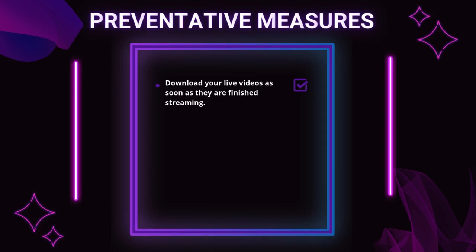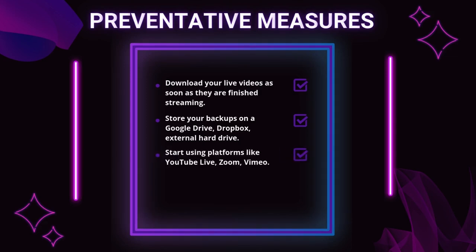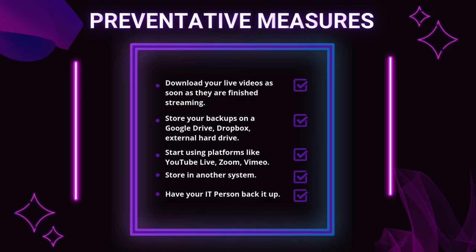Let's talk about preventative measures — what can we do to prevent this problem in the future? How can you make sure you never lose a live video again, whether it's on Facebook or anywhere else? First, download your live videos as soon as they are finished streaming. Store your backups on Google Drive, Dropbox, or an external hard drive. If your lives are important to your business, start using platforms like YouTube Live, Zoom, or Vimeo, or store content in another system and have it backed up with an IT person. If you go live regularly, record a separate backup while streaming using OBS Studio, Zoom, or your camera — this ensures you always have a high-quality version.